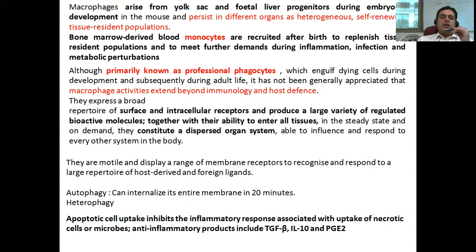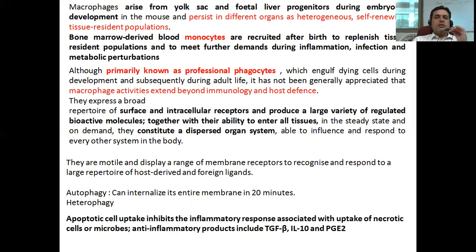Programmed cell death — apoptosis — is for getting rid of such types of cells in our body. Necrosis is something different. Necrosis can be due to chemical injury, microbial attacks, or other reasons such as physical injuries, which damage tissues and cells. Such damaged cells are also sensed by the macrophages. The macrophage responds differently to these two types of things — apoptosis and necrosis — and the response is different in these two cases.